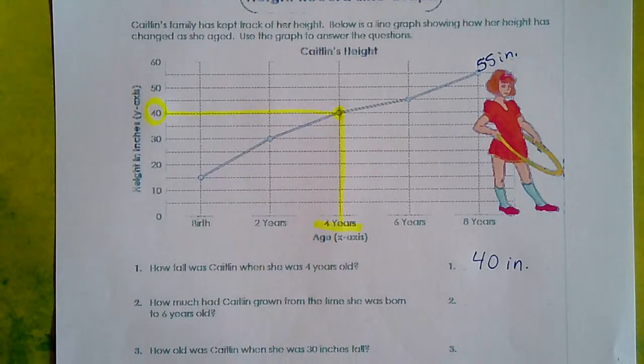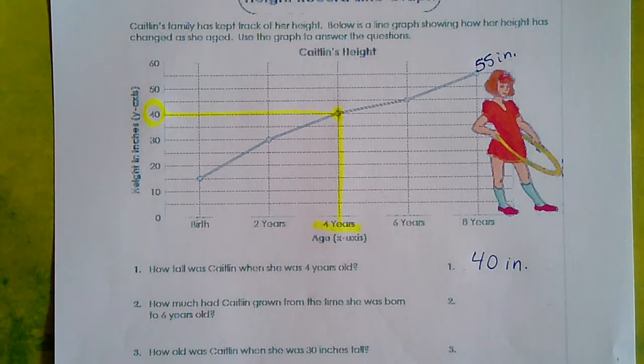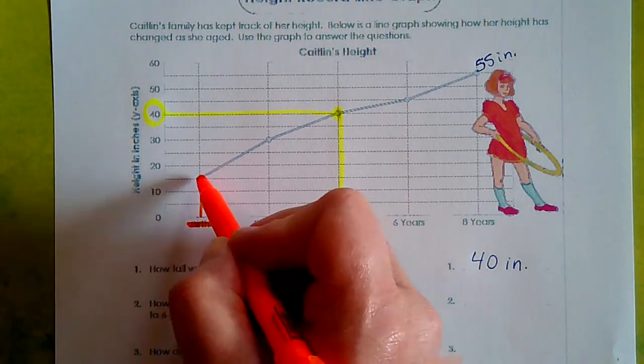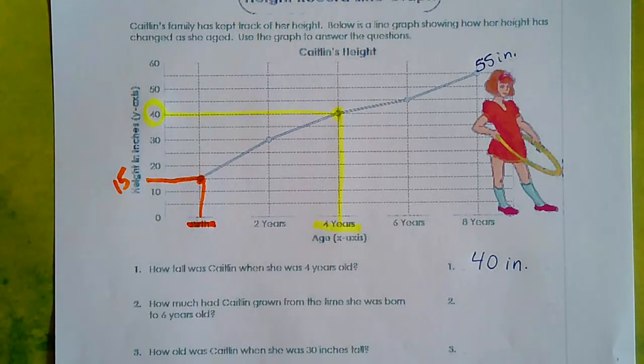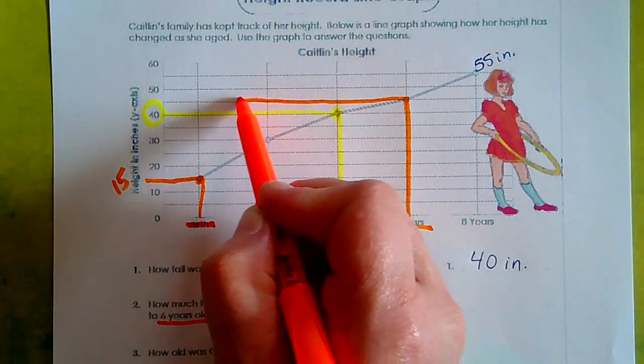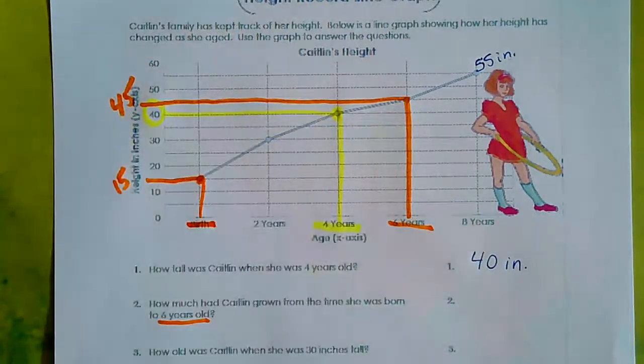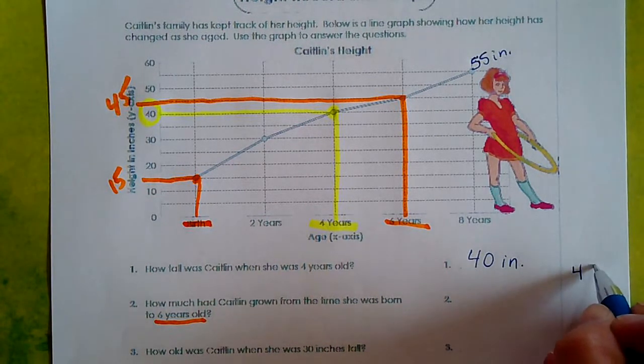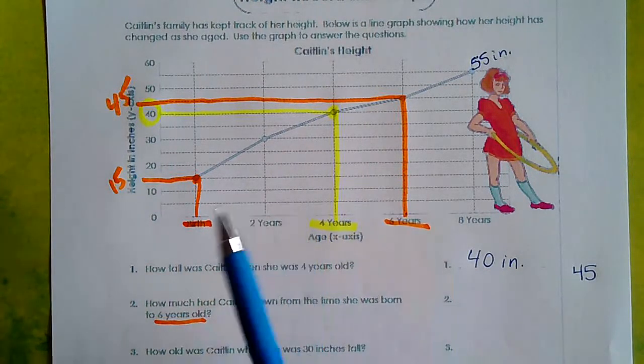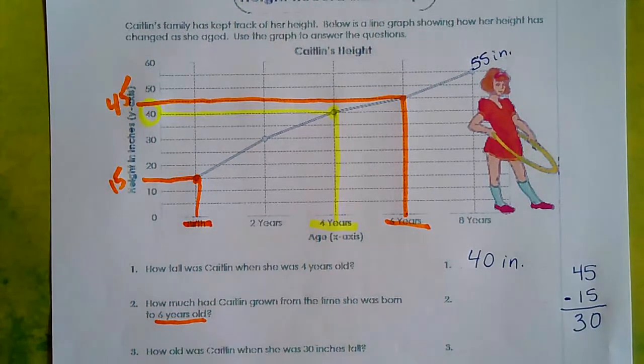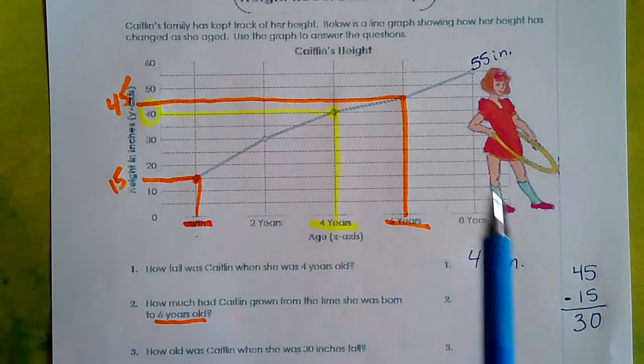How much had Caitlin grown from the time she was born to six years old? So what we have to do is find out how tall Caitlin was when she was born. Okay. That's birth. I'm going to follow that up. Here's our point. It takes us over. She was 15 inches long or high when she was born. Now we have to look at when she was six years old, which is right here. Follow our line up until we get to our point. Go horizontally to get our number. And it shows us she was 45 inches when she was six years old. So what we have to do is find the difference, which means we subtract, in Caitlin's height when she was six years old and her birth. So we're going to do 45, subtract 15, and we get 30. So Caitlin grew 30 inches from the time she was born until she was six years old.